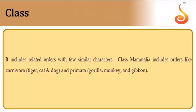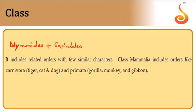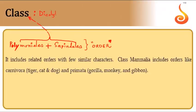Similar orders are put into the same class. For example, plant order Polemoniales and order Sapindales (which includes mango) share similarities and are placed together in class Dicotyledonae. Similarly, in animals, order Carnivora and order Primata are placed under class Mammalia based on their similarities.